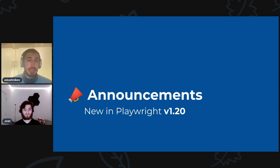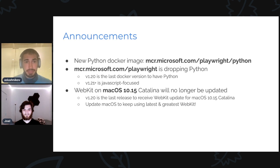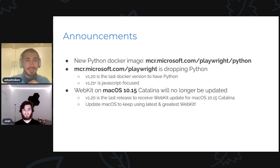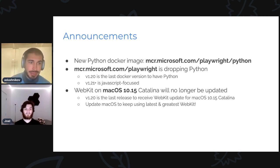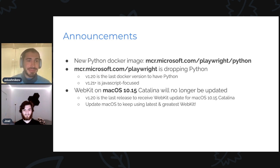Last part: announcements. We have three things for this release. First, we now have a new Docker image designated specifically for Python users — it's mcr.microsoft.com/playwright/python. Do remember to pin the version number. Second, our main JavaScript image used to bundle Python — that will no longer be the case. Since the following release you still have Python, but we'll drop it next release. So everybody gets a smaller Docker image — Python people won't get JavaScript and JavaScript people won't get Python. And last, WebKit on macOS 10.15 will no longer be updated, because the upstream version of WebKit dropped support for macOS 10.15. So if you want the latest and greatest WebKit version, please update to the latest macOS.